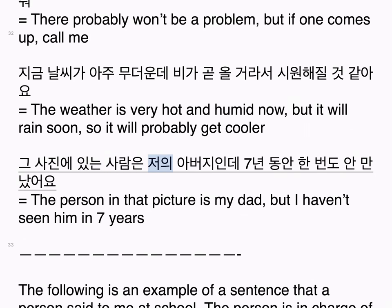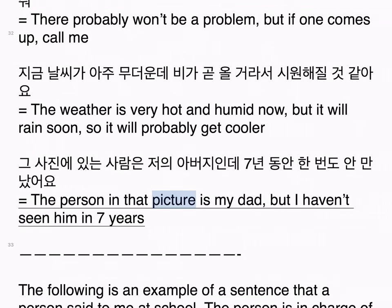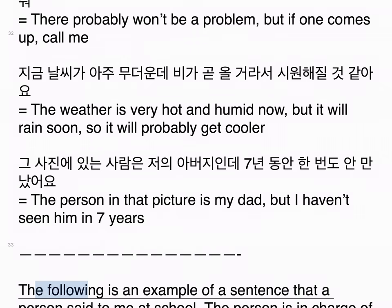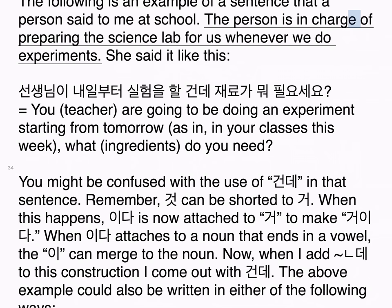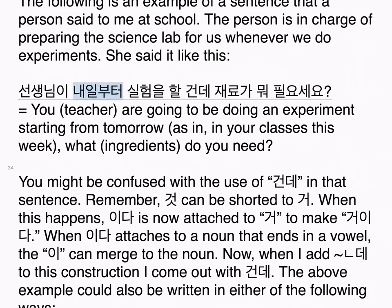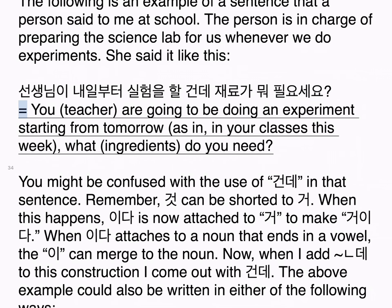That picture is my dad, but I haven't seen him in seven years. The following is an example of a sentence that a person said to me at school. The person is in charge of preparing the science lab for us whenever we do experiments. She said: 'You, teacher, are going to be doing an experiment starting from tomorrow — in your classes this week. What ingredients do you need?'